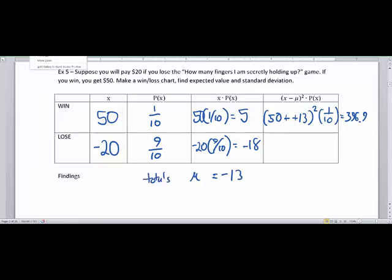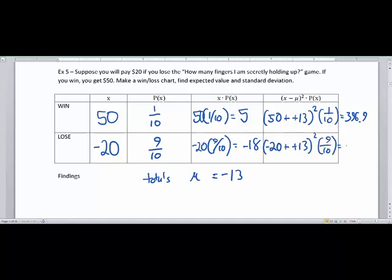So down in this blank here, we are going to take our negative 20 event and subtract negative 13, our average. We'll square it. We'll do our little swipe, swipe, so we have the negative 20 plus the 13. And then we're going to multiply this by nine-tenths, and we get an answer of 44.1. Now we're going to have a total here. If we add up these two numbers, we get 441. This here is our lowercase sigma squared, also known as the variance.